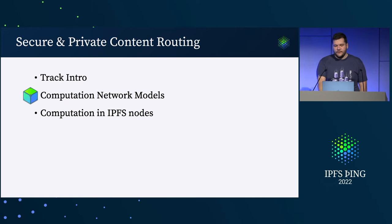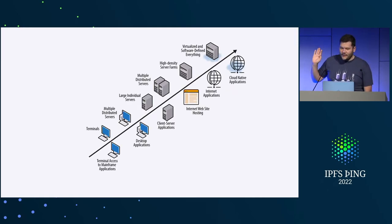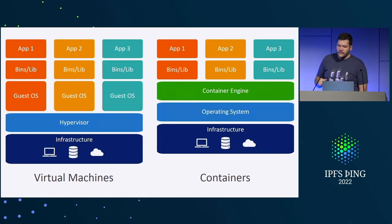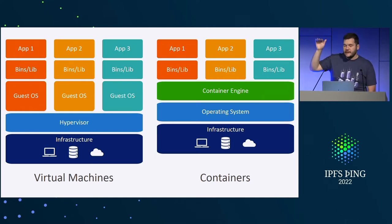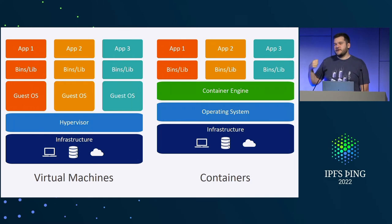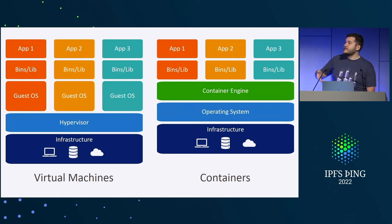A quick brief on computation network models. Throughout the development of computing, we've seen a ton of different computation models moving through many different platforms. These days most of the machinery out there has layers of systems that end up virtualizing and layering VMs of different types on top of hardware — things like VMs, hypervisors, containers, and even smaller little shards of computation like lambdas.